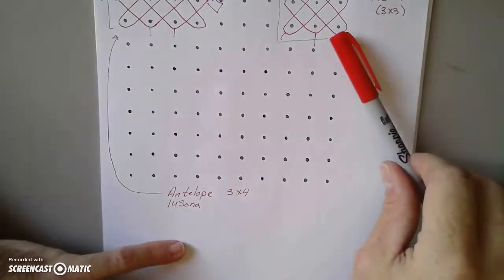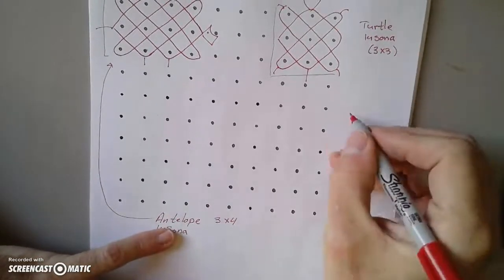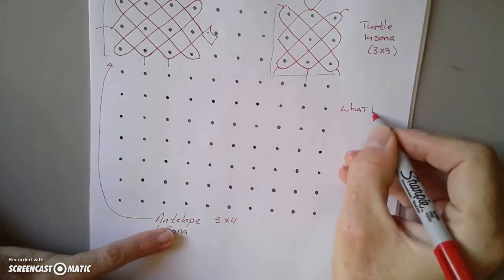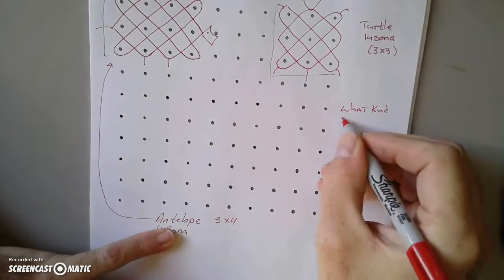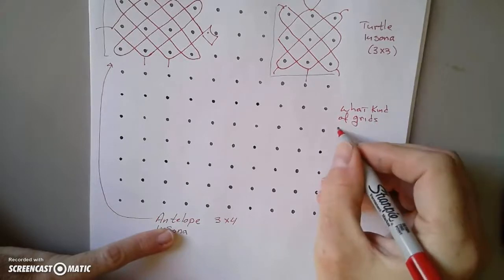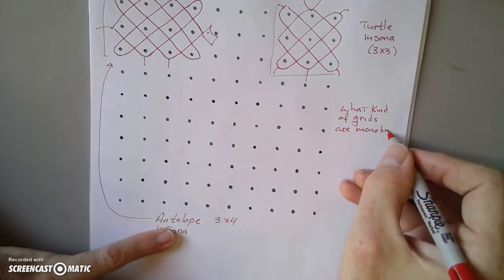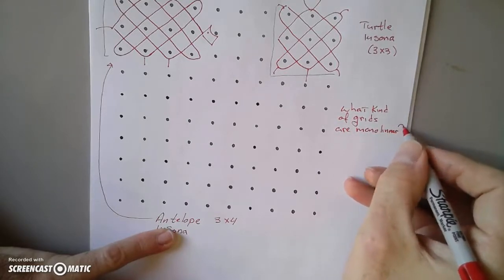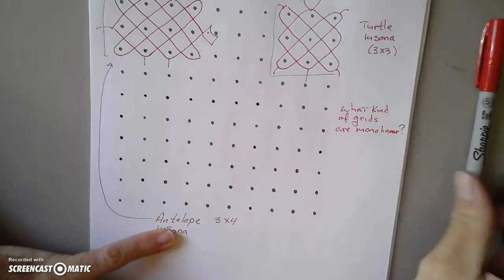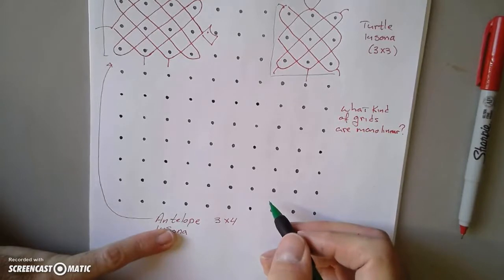Now one thing to consider, so the question for you is, what kind of grids are monolinear? Let's just do a quick example, see if I can't give you a hint.